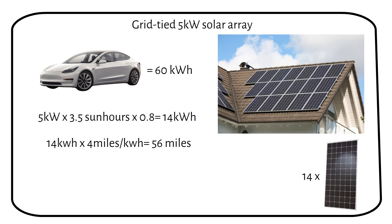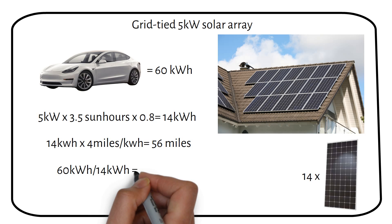Actual daily output may vary with weather conditions, producing less energy on cloudy days and potentially more on sunnier days. To fully charge a Tesla with a 60 kilowatt hour battery using a 5-kilowatt solar array would take roughly 4.3 days, assuming an average production of 14 kilowatt hours daily.